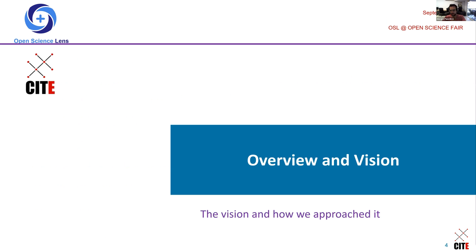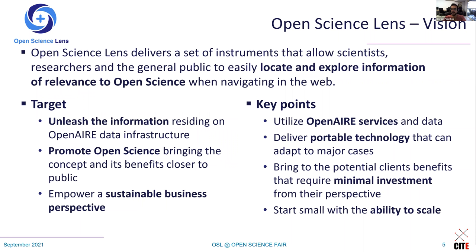Open Science Lens aims to deliver a set of instruments that will allow scientists, researchers, and the general public to locate and explore information relevant to open science easily while navigating the web. We started with three targets in mind: to unleash information already residing within OpenAIRE data infrastructure, to promote open science by bringing the concept and its benefits closer to the public, and to have a sustainable business perspective.